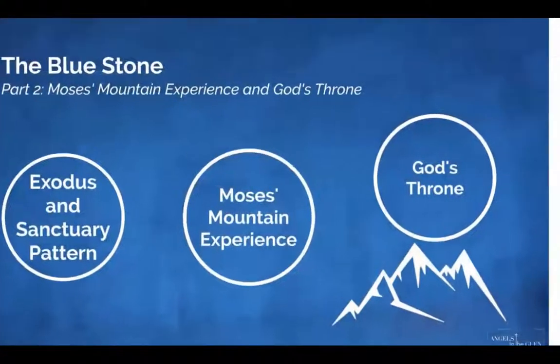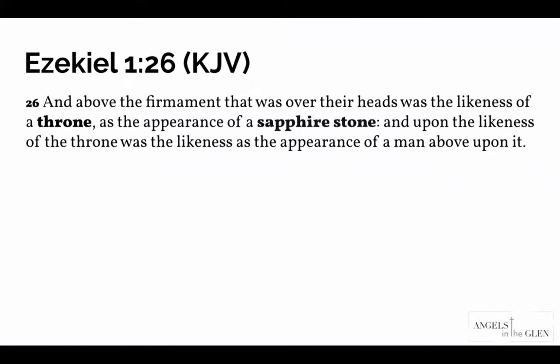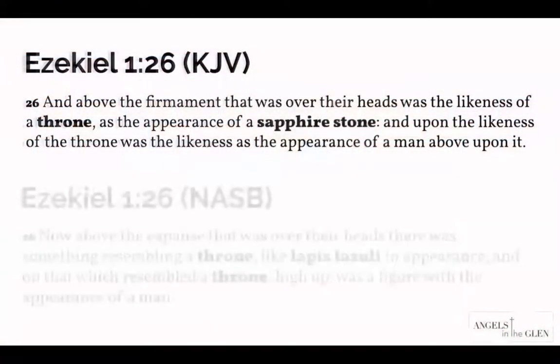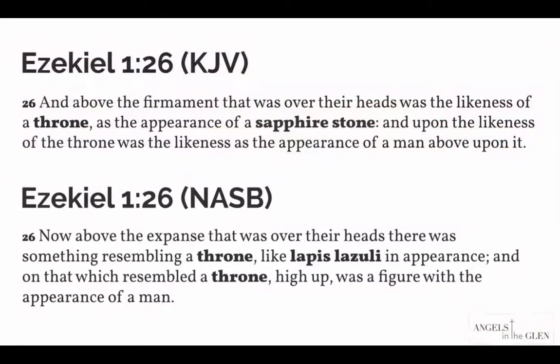Now does the Bible teach that God's throne was made of blue sapphire stone? Absolutely. Ezekiel 1:26: 'Above the firmament that was over their heads was the likeness of a throne, as the appearance of a sapphire stone, and upon the likeness of a throne was the likeness as the appearance of a man above upon it.' Ezekiel sees a throne of sapphire stone — that man on the throne would be Jesus Christ. In the NASB, Ezekiel 1:26 says 'something resembling a throne like lapis lazuli in appearance.'